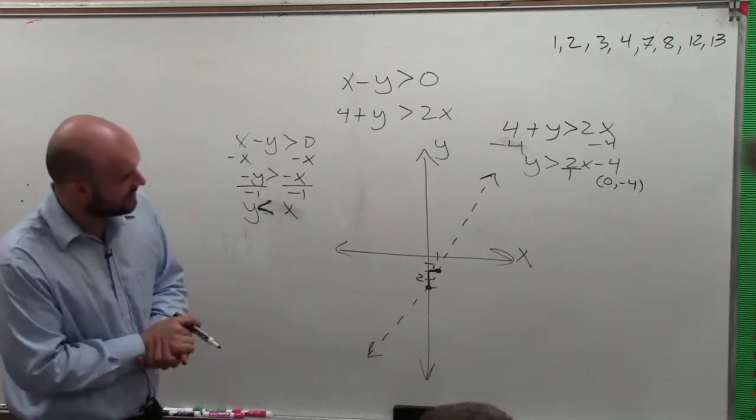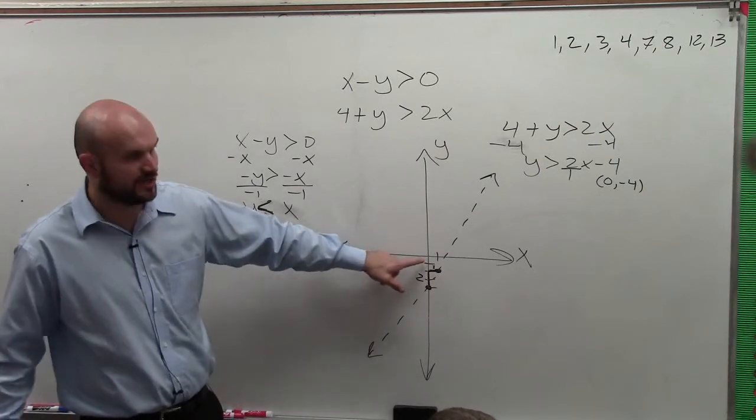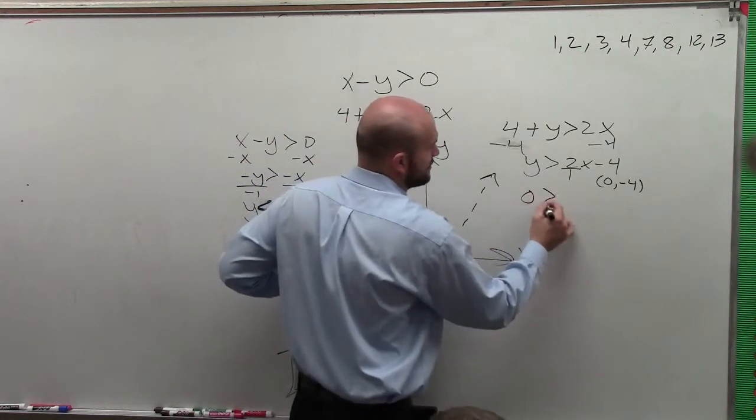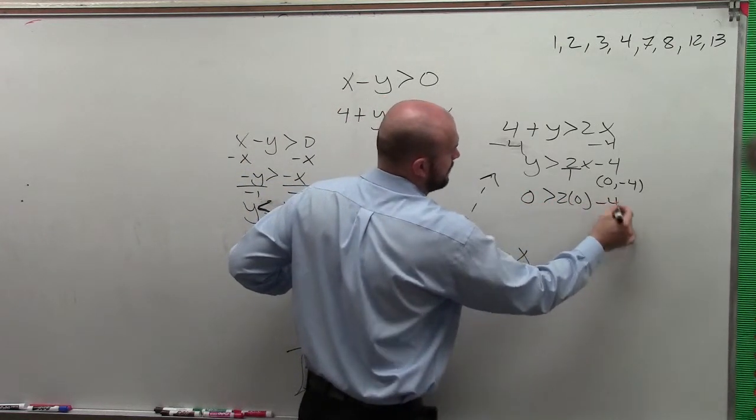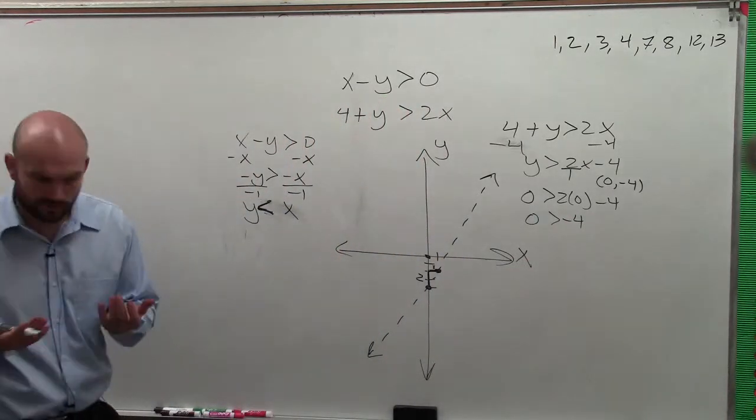Now, the next thing is, let's do a test point. Remember, we want to pick a test point that's not on the line. So the best test point here would be 0, 0, right? So let's plug in 0 is greater than 2 times 0 minus 4. 0 is greater than negative 4. Is that true or false? True.